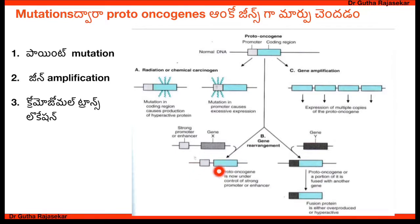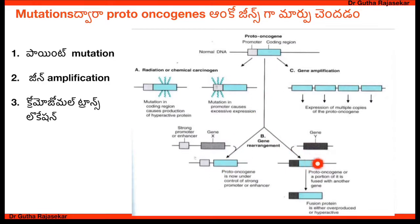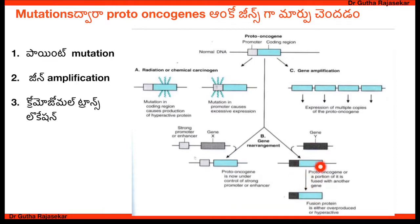Here is a promoter — a strong promoter — associated with the structural gene. After translocation, the starting point and regulator point are moved, creating a fusion protein. This fusion protein leads to hyperactivation and a continuous signal transduction, resulting in cell proliferation.